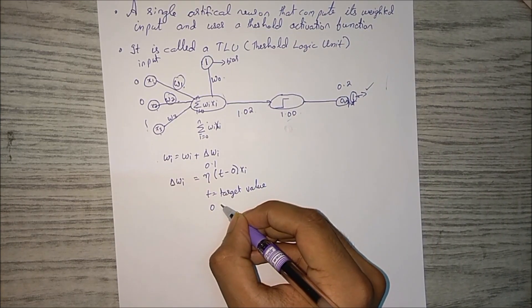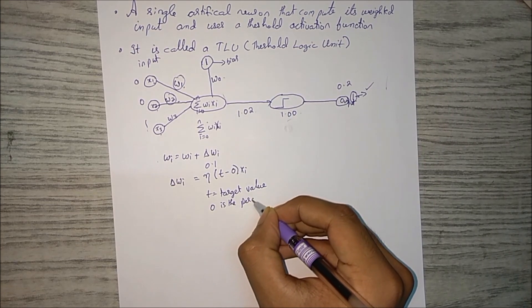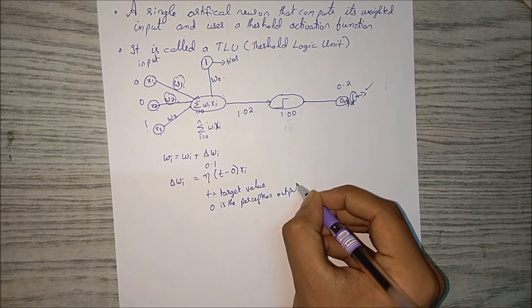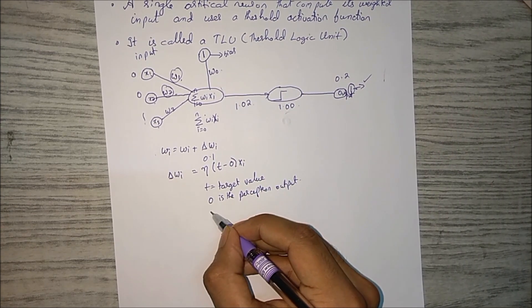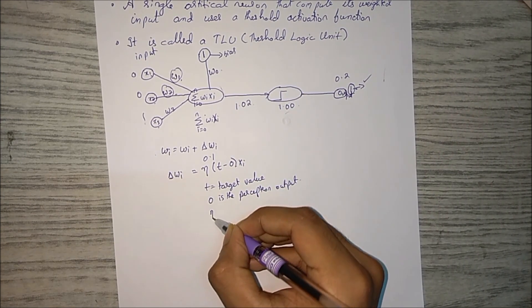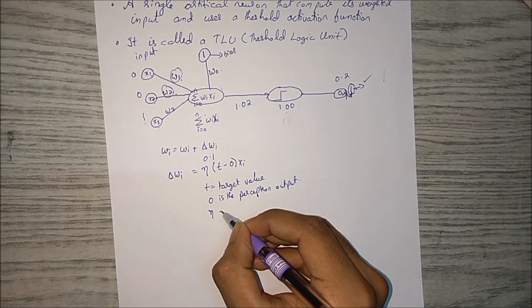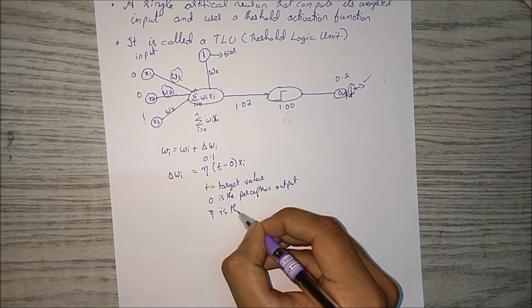t is the target value. What is o? o is the perceptron output.